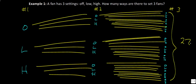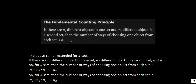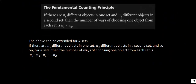That really shouldn't surprise you, because we had three for the first fan, three for the second fan, and three for the third — three times three times three. And that really is what the Fundamental Counting Principle says: if there are n different objects in one set and n different objects in the second set, we can simply multiply them together. We can extend that for as many sets as we want, all the way up to k sets.